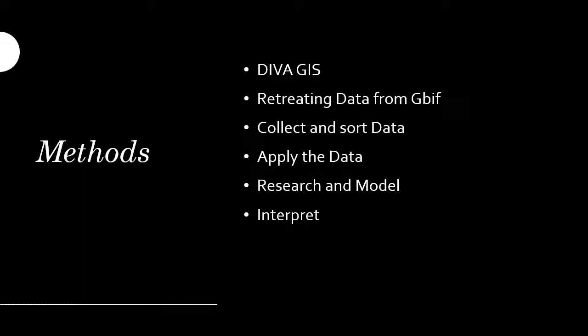The methods I used to collect the data in my PowerPoint: first we downloaded DIVA, then we gave our species and retrieved data from G-WIFT, collected the data and put it on Excel, sorted it out, and then cut it down to a thousand records so we were able to put it onto DIVA. Everything else was from DIVA, and I also had to do research on my species about certain factors that are applicable to it.